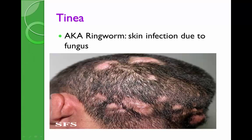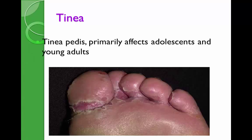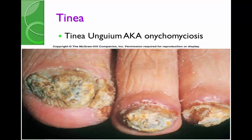In tinea capitis you can see areas of baldness with damage of the hair follicle. The key difference between tinea capitis and alopecia areata is that in alopecia areata there is no hair at all in the center, while in tinea capitis there is a broken shaft of damaged hair. Here you can see the moisture, humidity, and skin damage caused by the fungi. Tinea unguium is also called onychomycosis.